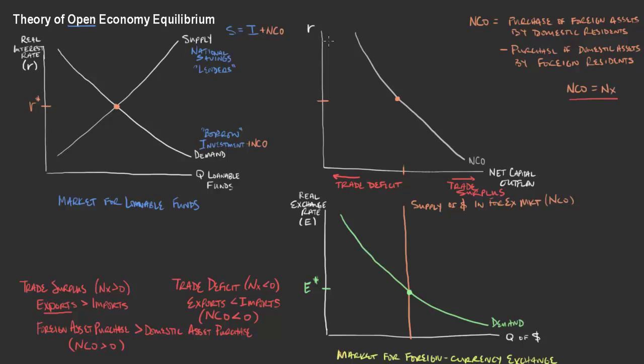that makes our assets more attractive. There's a higher rate of return on domestic American assets. The purchase of domestic assets by foreign residents would be highly incentivized. So when thinking about this, it's easiest to think about net capital outflow in terms of foreign residents and foreign exchange, and that's really what connects it down here to the real exchange rate.